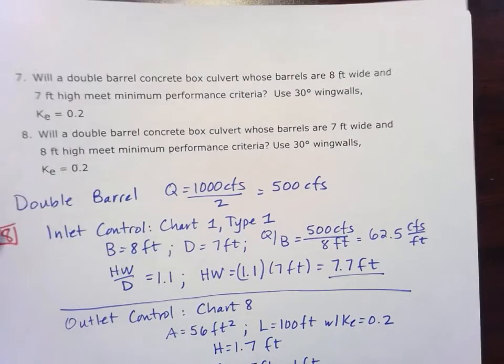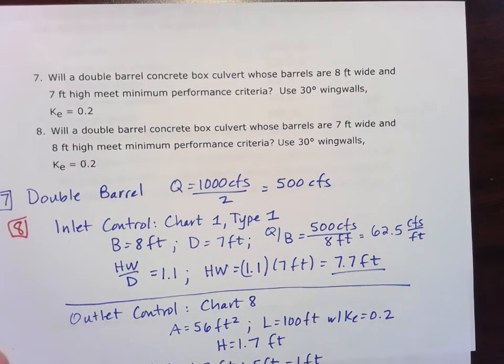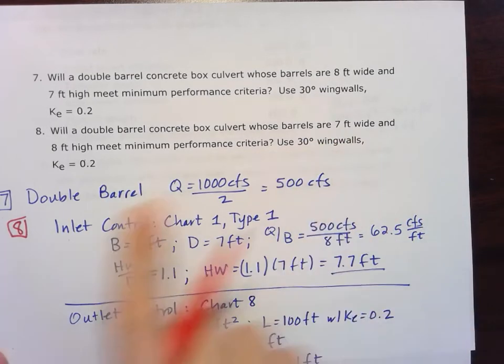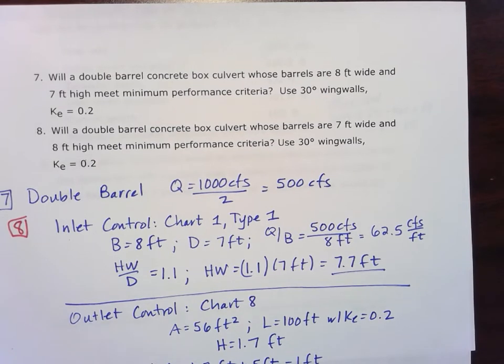So when we did it for the first scenario here for 8 feet wide and 7 feet high, it was inlet controlled. Neither of these were bigger than the 8.3. So now we want to try it by switching the 7 and 8 and see if that's going to switch things around.